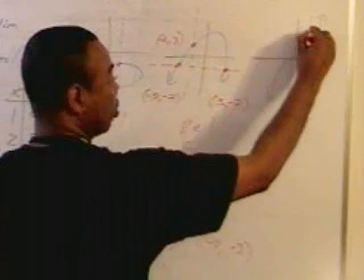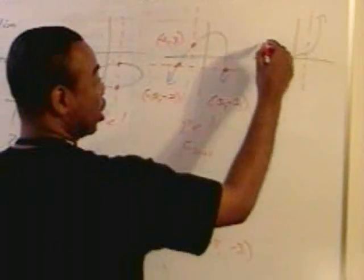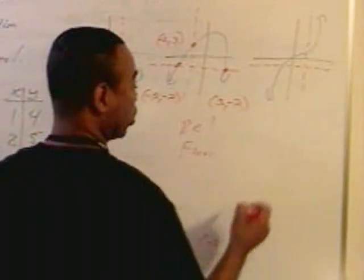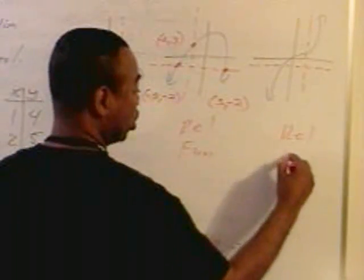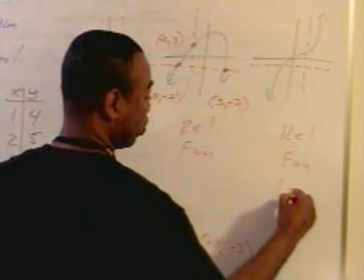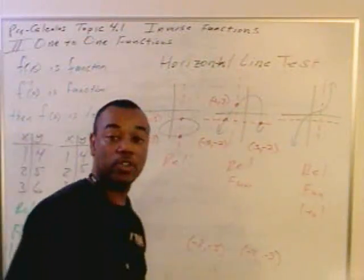This graph, on the other hand, passes the vertical line test and the horizontal line test. So, it's a relation, it's a function, but it's also one-to-one.